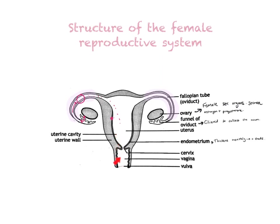This area is the vagina — that's where you'd put a tampon to collect your flow or a menstrual cup, and it's also where the penis is inserted during copulation. The opening is the vulva, which is the outside entrance of the vagina.